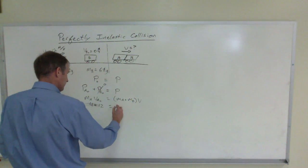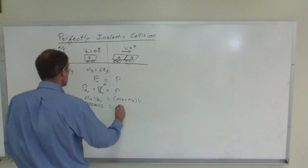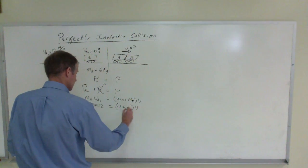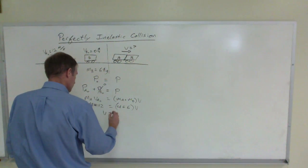Right? And then that's going to be times, well, 4 plus 6 is 10, times V. And so V equals 48 divided by 10, which is 4.8 meters per second.